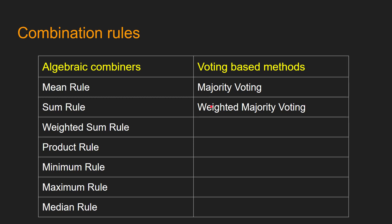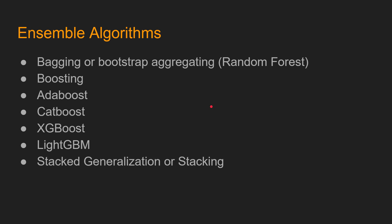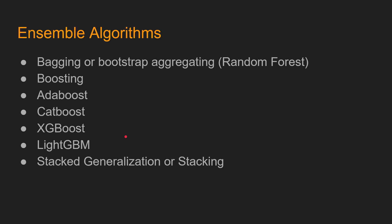The main ensemble algorithms are: bagging, which is directly related to bootstrap and is also called bootstrap aggregation — random forest is the most famous algorithm under this category. Then there are boosting algorithms like AdaBoost, CatBoost, XGBoost, and LightGBM. There is also stacking, or stack generalization. We will discuss all of these algorithms thoroughly in future videos. Hopefully this video gave a fair idea about what ensemble learning is.